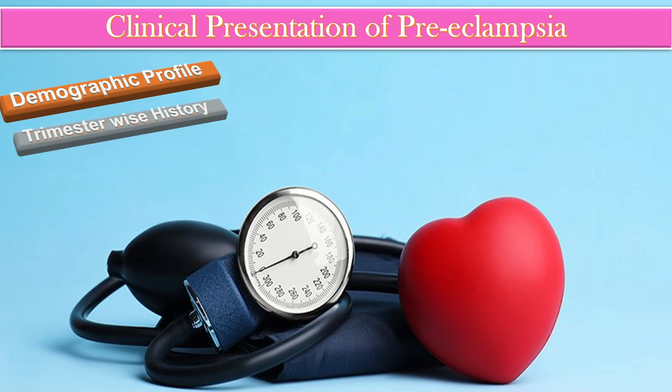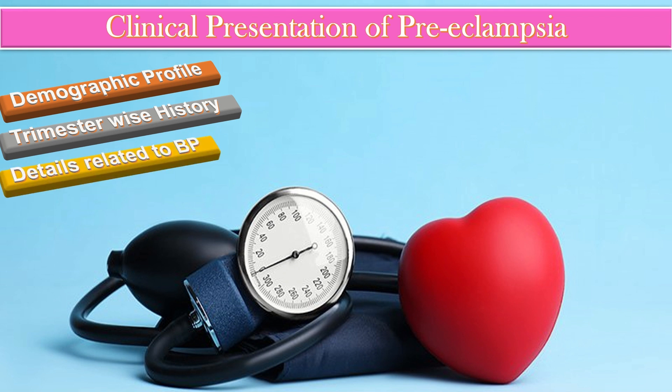We take trimester-wise history from the first trimester to the current gestational age, asking routine questions at each stage. Detail related to blood pressure is very important — we ask when the high blood pressure complaint started, because if the patient presents with raised blood pressure before 20 weeks of gestation, this most probably indicates chronic hypertension.